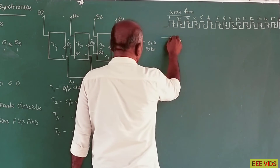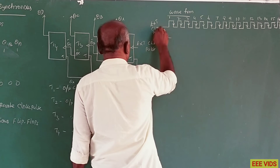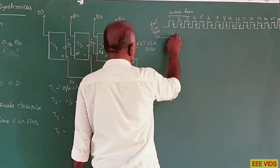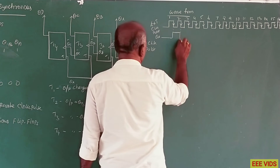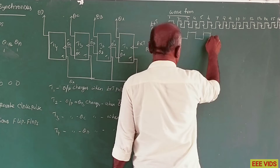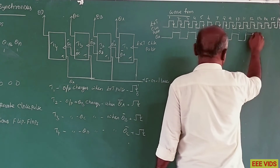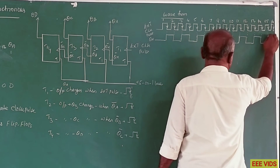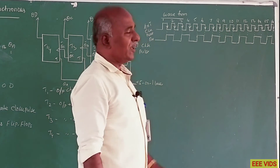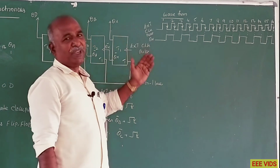First, marking QA with respect to the external clock pulse. Whenever the external clock pulse goes 1 to 0, QA changes. So QA is plotted based on these negative edges of the external clock pulse.